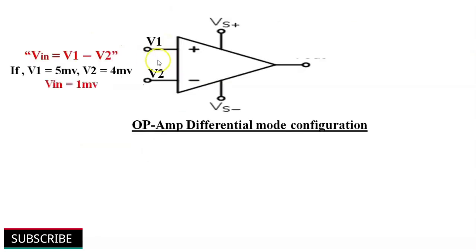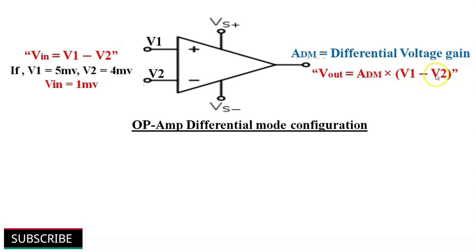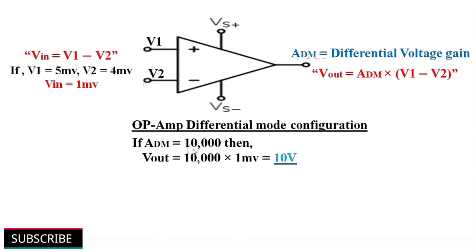If two input signals V1 = 5 mV and V2 = 4 mV are applied to the non-inverting and inverting terminals of an operational amplifier respectively, the difference between these two input signals V-in becomes 1 mV. ADM represents the differential voltage gain. The output in differential mode configuration is V-out = ADM × (V1 − V2) or V-in. Suppose the differential voltage gain ADM equals 10,000; then V-out = 10,000 × 1 mV = 10 V at its output.